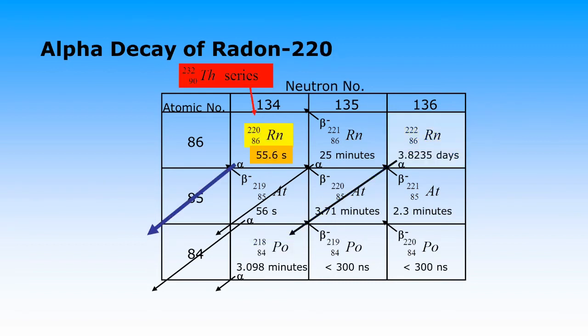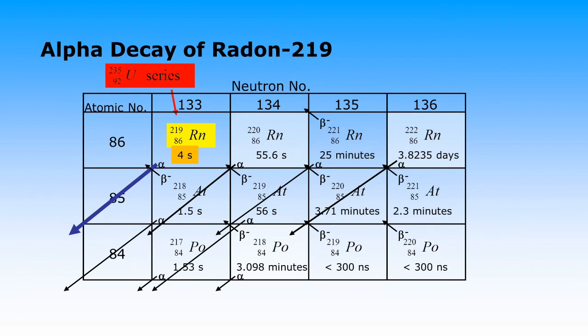In many areas, thorium is more abundant than uranium, and radon-220 is the corresponding noble gas step with a much shorter half-life. Lastly, the uranium-235 decay series includes radon-219 that has an even shorter half-life.